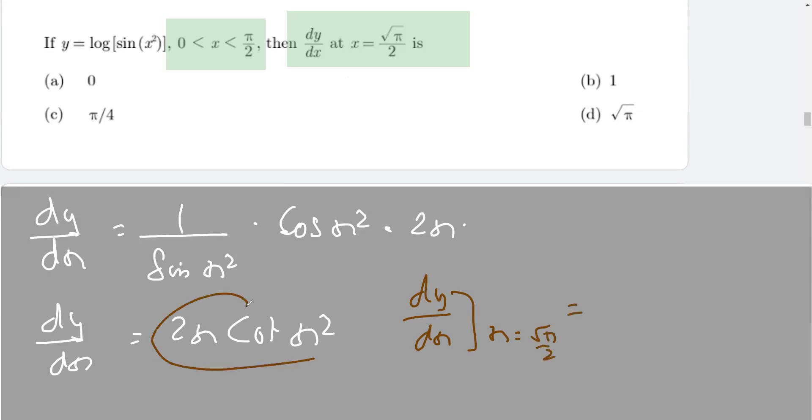So we are replacing x here: 2 times square root of pi by 2, times cot of x squared.